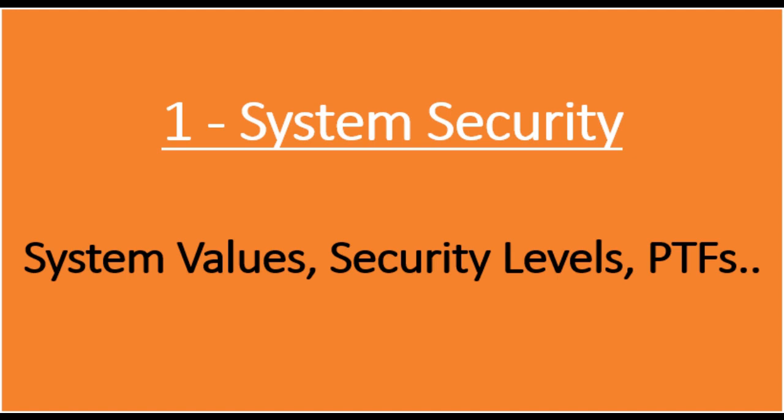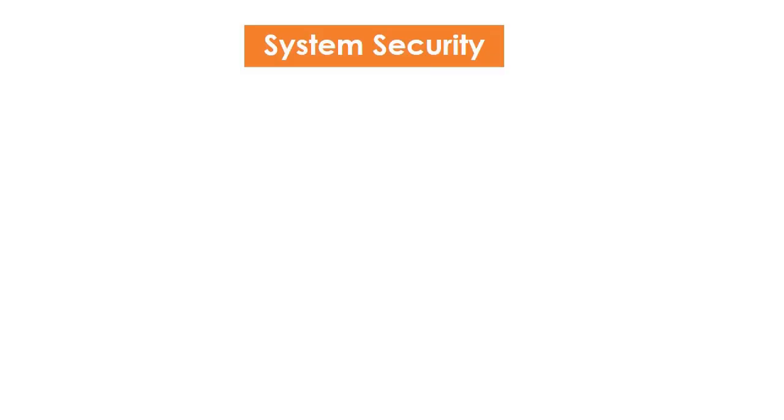Point number 1: System Security. Before we dive into the system security settings, it is important to understand the different levels of security in AS/400. There are 5 levels of security starting from 10, with least security, to the value of 50 being the highest. At level 10, there is no security — no password is required to log in and users have access to all resources.